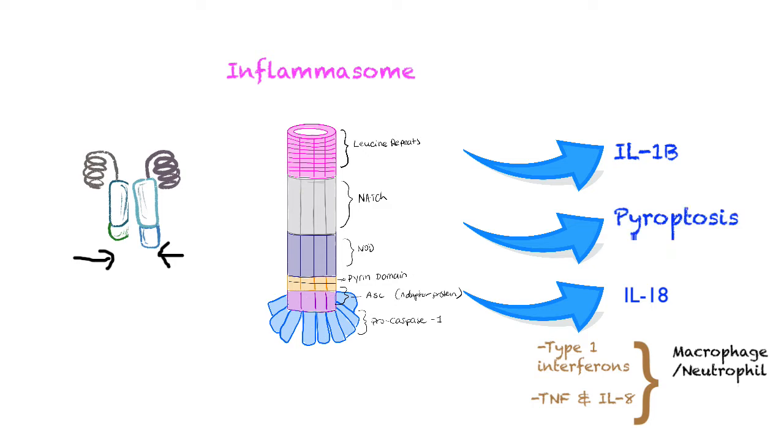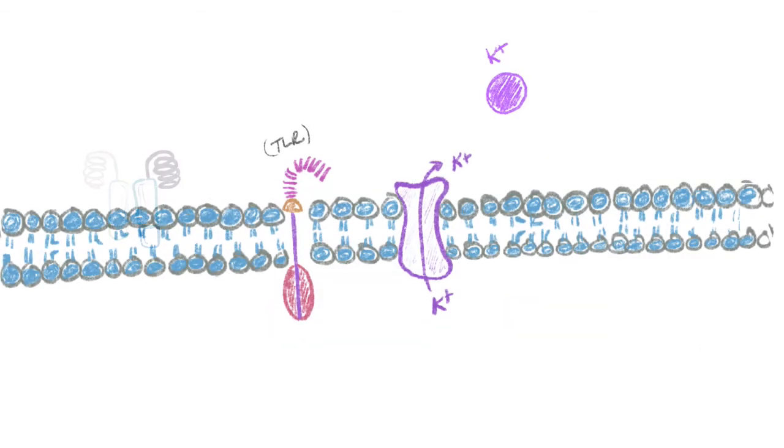Pyroptosis is a little bit different than apoptosis, but nevertheless it's a cell death. This NLRP3 family is interesting because it can also be activated by a major efflux of potassium from the cell.